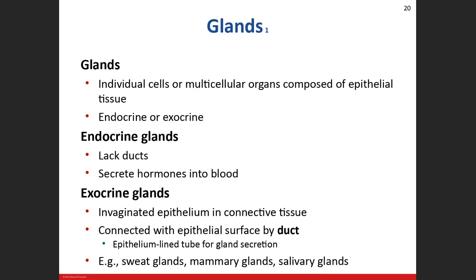Endocrine glands are covered in chapter 17. Exocrine glands have a duct. During development, parts of the epithelium invaginate into themselves — that sunken portion creates the gland. There are two parts to an exocrine gland: a duct, which transports secretions outward, and a secretory portion — the large bulbous area.